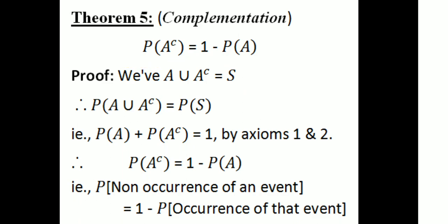That is, probability of A complement equals 1 minus probability of A. We have A ∪ Aᶜ = S (total set), and they are disjoint, so by axiom, P(A) + P(Aᶜ) = 1, giving P(Aᶜ) = 1 - P(A). That is, the probability of non-occurrence of an event equals 1 minus the probability of occurrence of that event.